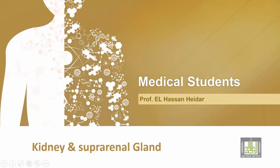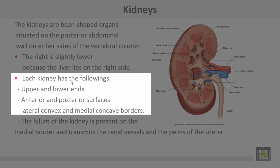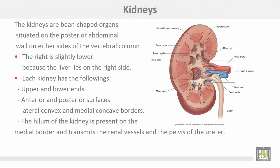The kidneys are bean-shaped organs situated on the posterior abdominal wall on either side of the vertebral column. The right kidney is slightly lower because the liver lies on the right side. Each kidney has upper and lower ends, anterior and posterior surfaces, and lateral convex and medial concave borders. The hilum of the kidney is present on the medial border and transmits the renal vessels and pelvis of the ureter.